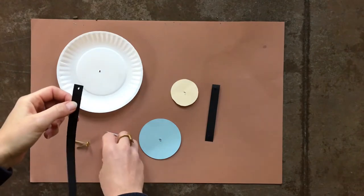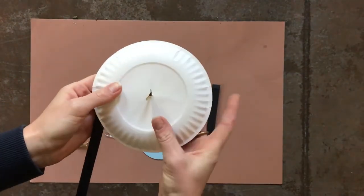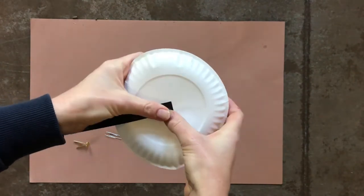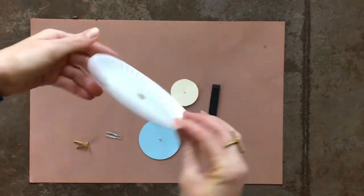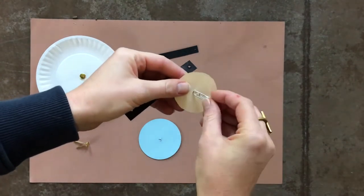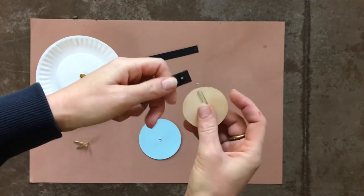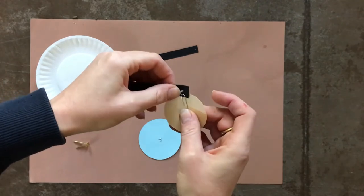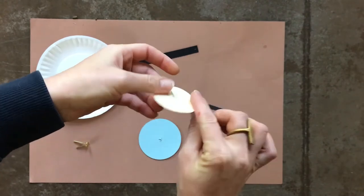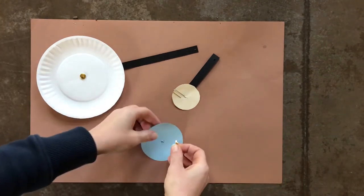Use fasteners or paper clips to attach your system together. Attach one end of the long strip to the Sun and one end of the shorter strip to the Moon, then attach the other ends of both strips to the Earth.